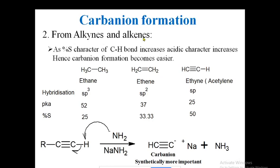Now, from alkynes and alkenes, how we can prepare carbanions. Here I have taken some examples: alkane is ethane, alkene is ethene, and alkyne is ethyne. The hybridization of carbon is sp3 for a single bond, sp2 for a double bond, and sp for a triple bond. Their corresponding pKa values are 52, 37, and 25. If pKa values are higher, it is a weaker acid; if pKa values are lower, it is a stronger acid. So for ethyne, the pKa value is lower, meaning it is the stronger acid — this hydrogen is highly acidic.